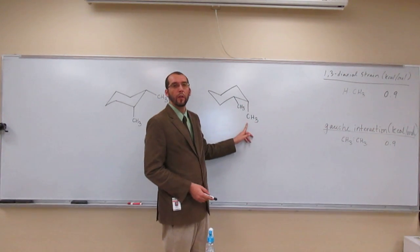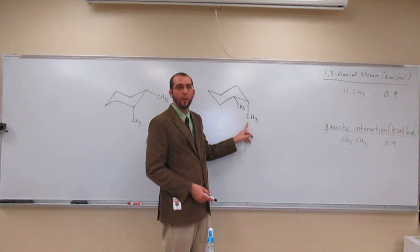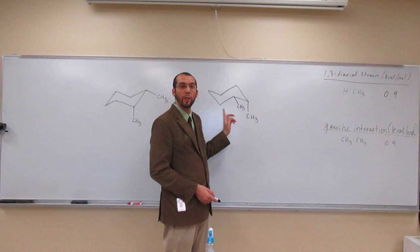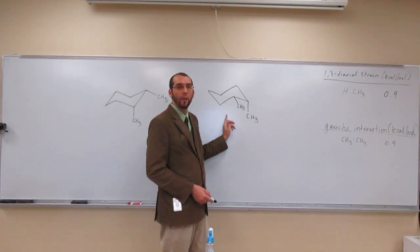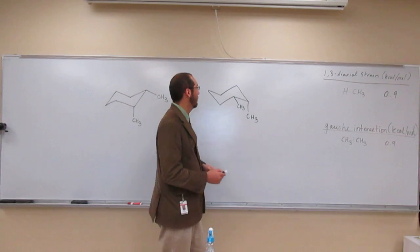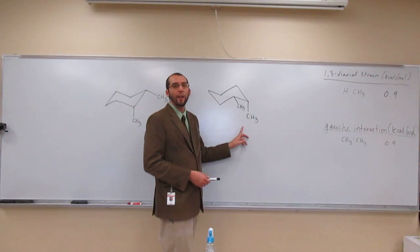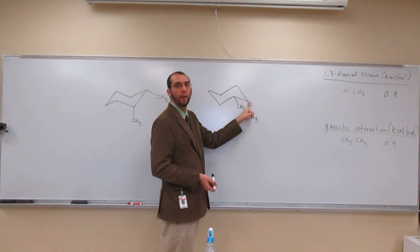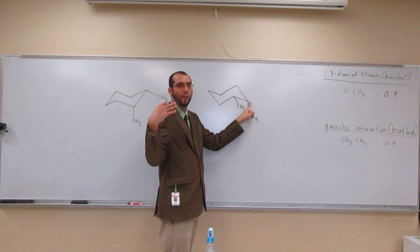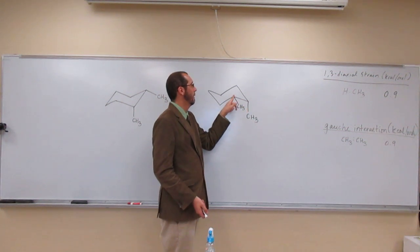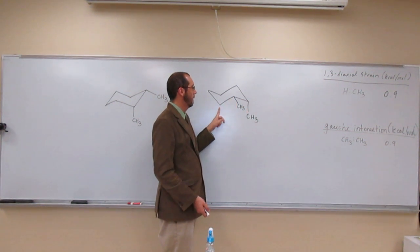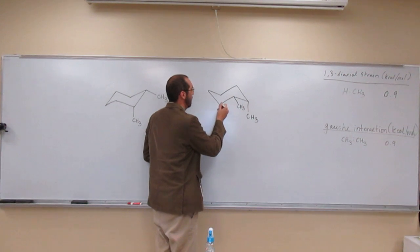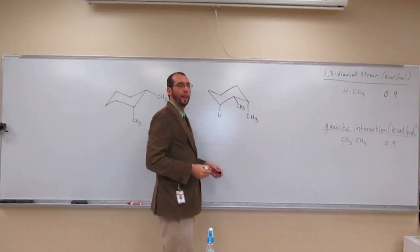Where is this methyl group? In the what position? Axial, right? Are there hydrogens on the bottom of this ring in the axial position? Yes, so they're going to have 1,3-diaxial interactions. So axial hydrogens down, that's what I'm looking for on this one. Is there one on this carbon? No. Is there one on this one? No. This one? No. This one? Yes. So let's draw it in. Like that.